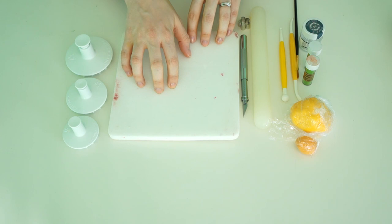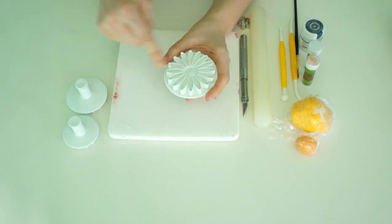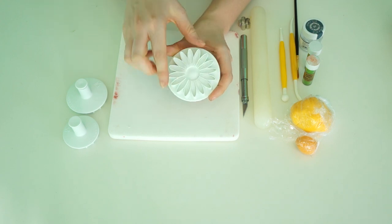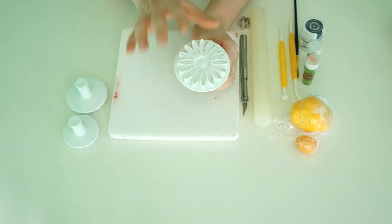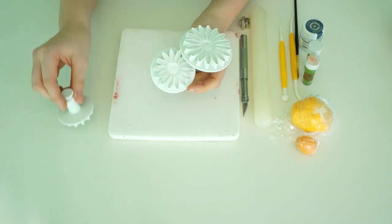Okay, so what we're going to need to make the flowers is some cutters. Now these ones have got the plungers on them, but we only actually need the cutter, so if you haven't got these same ones it's absolutely fine. I've got those in three different sizes.